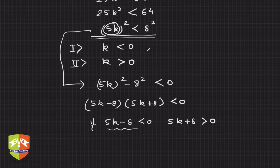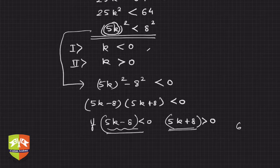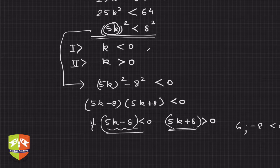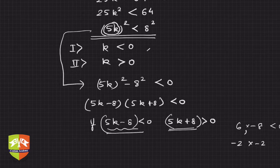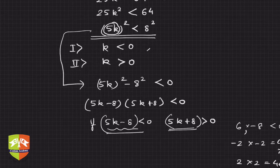We have two inequalities: 5k − 8 < 0 and 5k + 8 > 0, so their product is negative. For example, 6 × (−8) gives a negative product. If both factors are negative or both positive, the product is always positive — for instance, (−2)(−2) = 4 and 2 × 2 = 4. So one factor must be positive and one negative for a negative product.